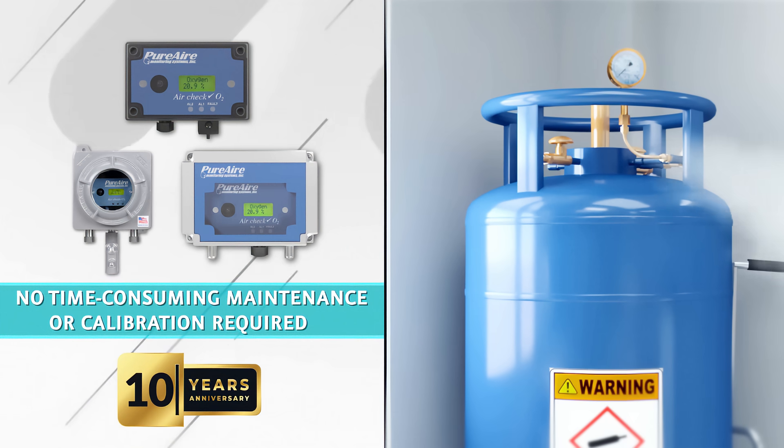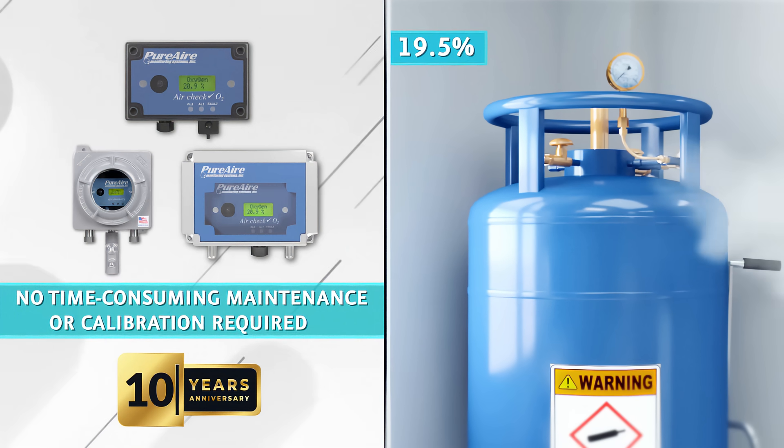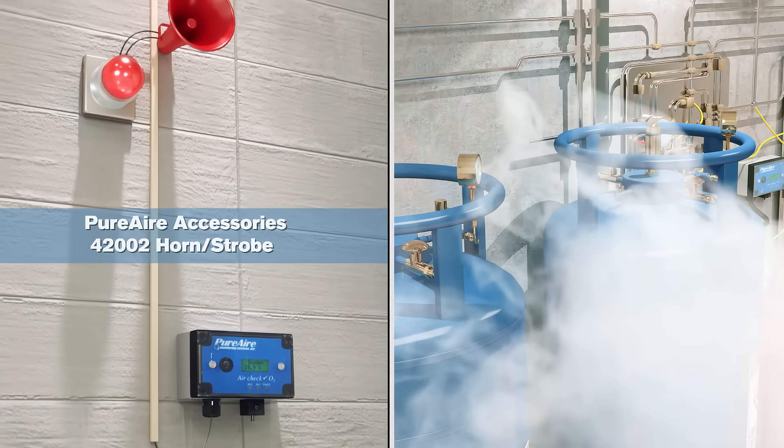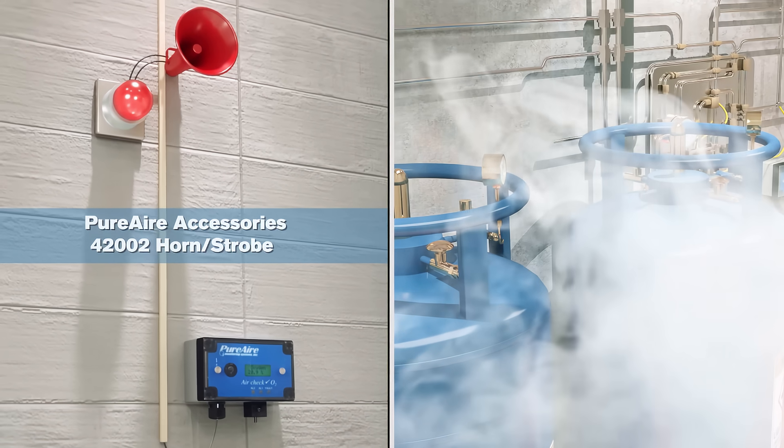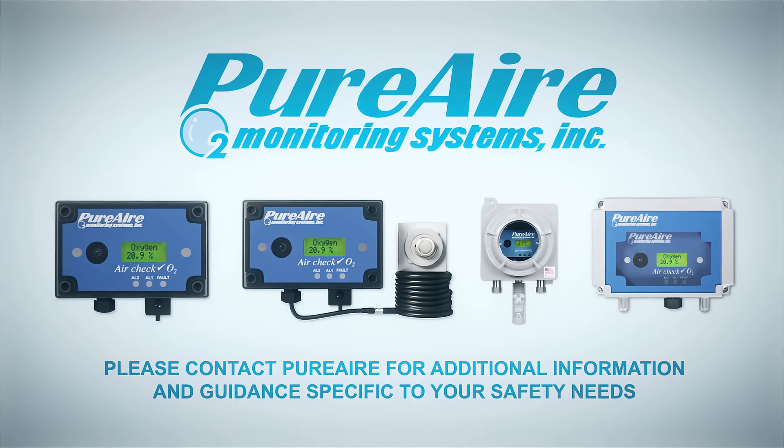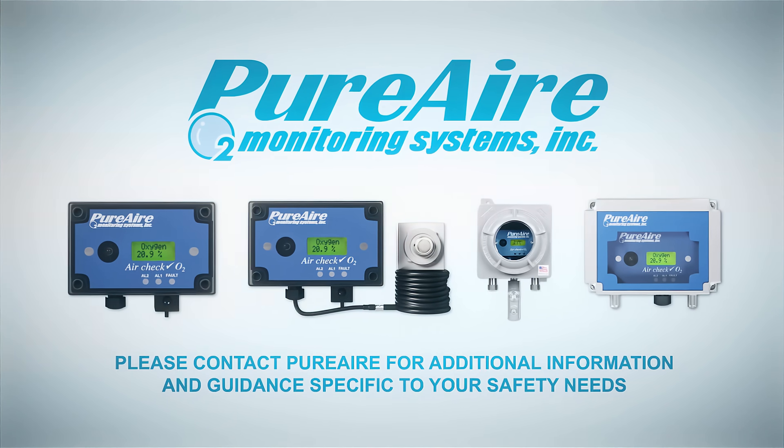In the event of a gas leak and a drop in oxygen to 19.5%, the monitor will set off an alarm, complete with horns and flashing lights, alerting employees to evacuate the affected area. Please contact PureAir for additional information and guidance specific to your safety needs.